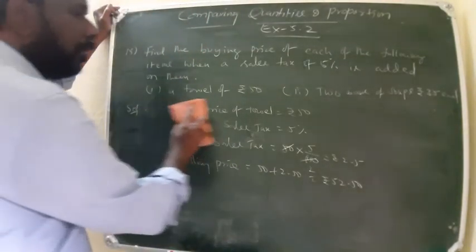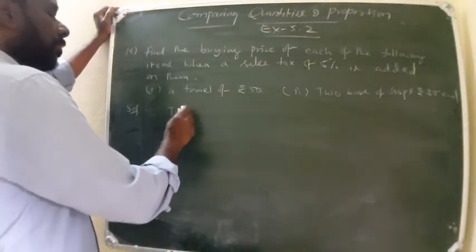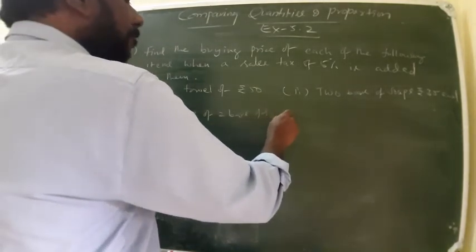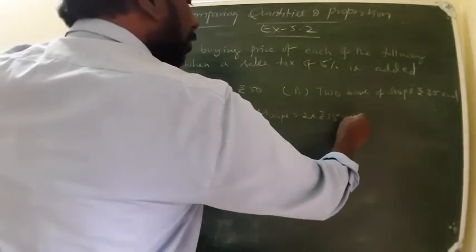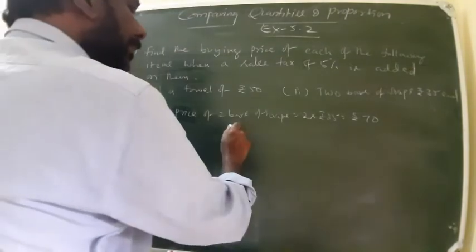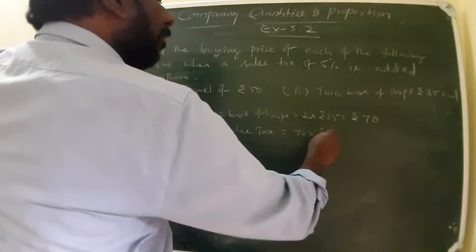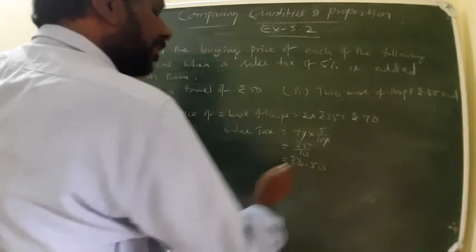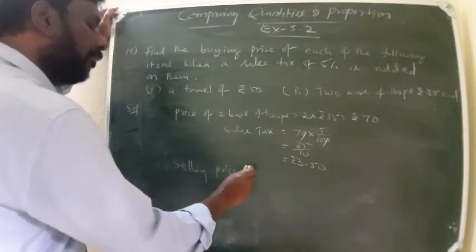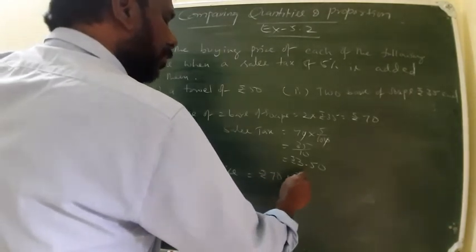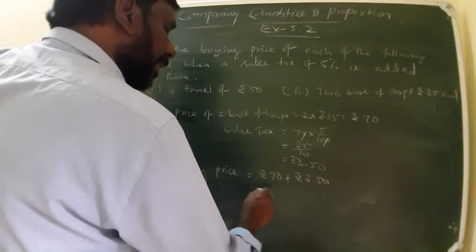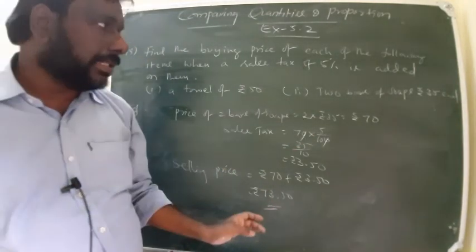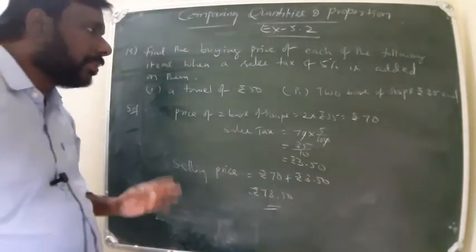And next, second one: two bars. Price of 2 bars of soaps is 2 into Rs. 35, that is Rs. 70. Actual sales tax, same percent, 5%: 70 into 5 by 100. Cancel: 35 by 10, that's 3.5, Rs. 3.50 paise. So selling price of 2 bars is Rs. 70 plus Rs. 3.50 paise, that is Rs. 73.50 paise. He has to sell the 2 bars of soaps including sales tax with Rs. 73.50 paise.